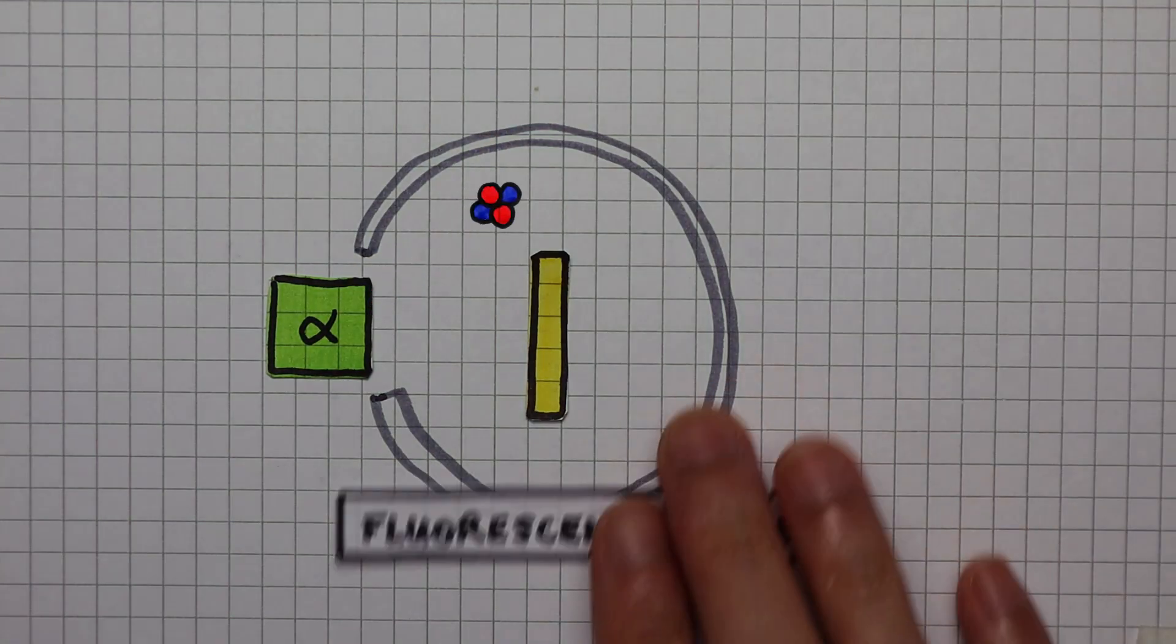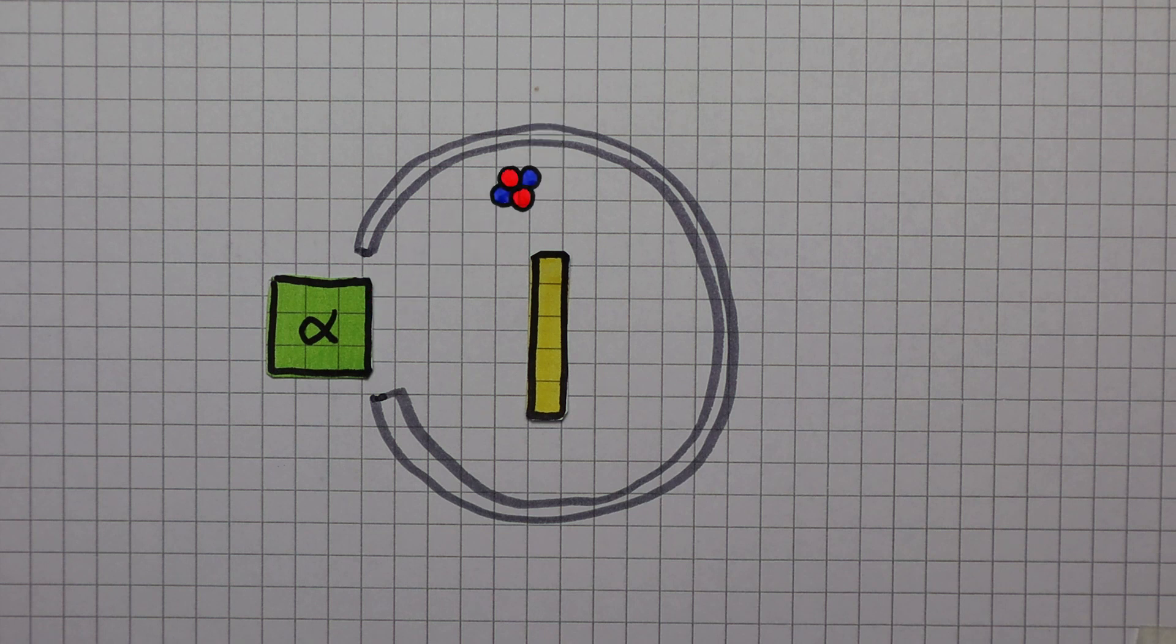Whenever an alpha particle lands on the fluorescent screen, that part of the screen flashes. As he bombards the gold leaf with alpha particles, Rutherford noticed a few things. He saw some alpha particles go straight through the gold leaf, but some were deflected at large angles, and some rebound straight back.